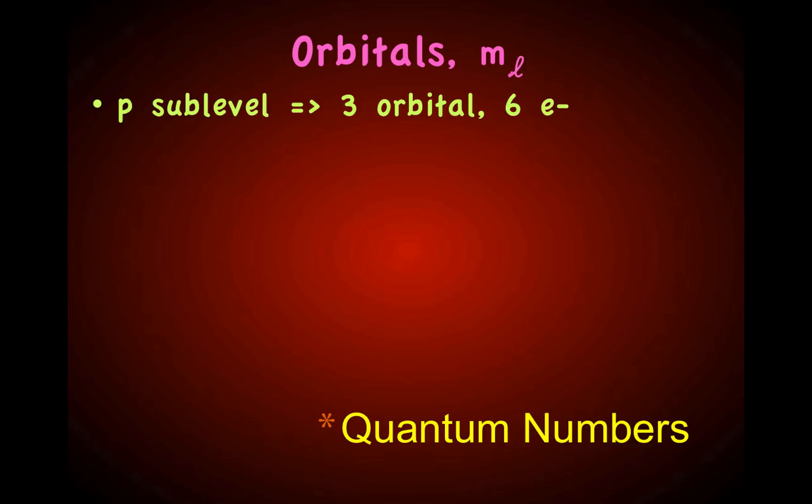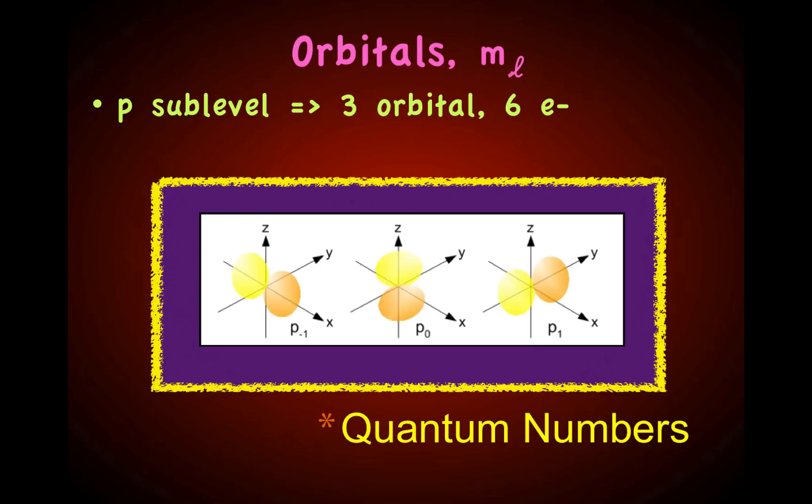A P sublevel has three orbitals — three directions, three different orientations in space. Since each orbital can hold two electrons, there can be six electrons in a P sublevel. In this diagram we see the three different orientations in space; since there are three orbitals each holding two electrons, there can be six electrons in a P sublevel.